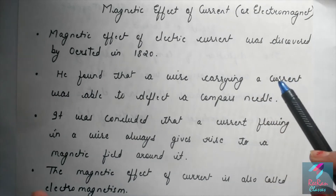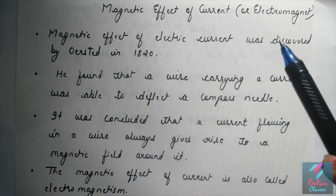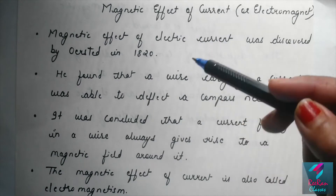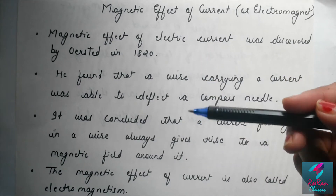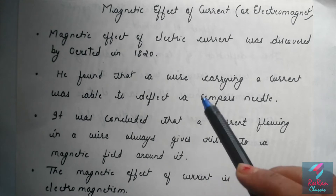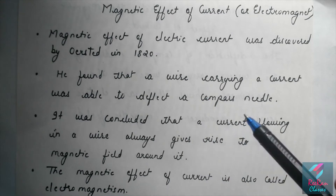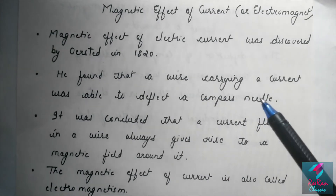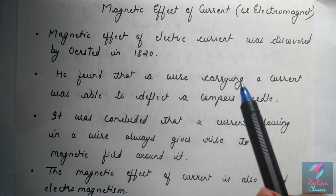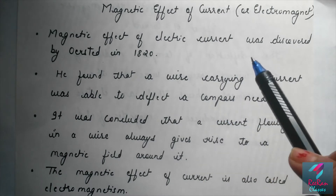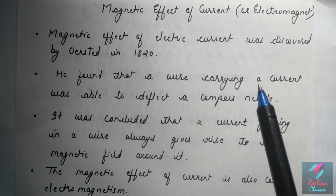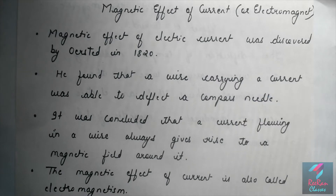Before this experiment, electricity and magnetism were two different subjects. We were learning about electricity, current, resistance, etc., and we were learning about everything about magnetism — the properties of magnetism. They observed that there was a relationship between electricity and magnetism.